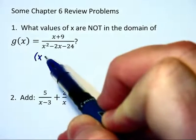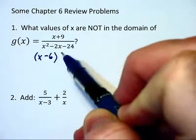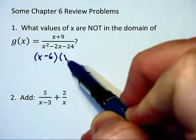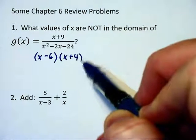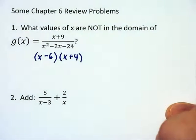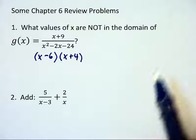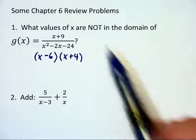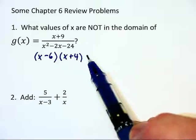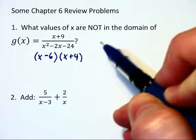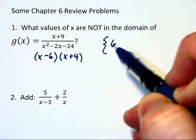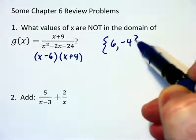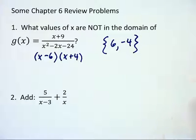When we look at this first problem here, we notice the denominator will factor into x minus 6 times x plus 4. Now be careful of the wording of the problem. This is not asking for the domain. This is asking what values of x are not in the domain. So in this case, the answer is 6 and negative 4 are the two values not in the domain.